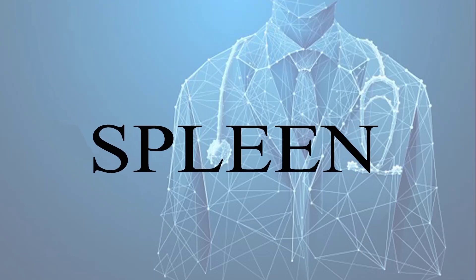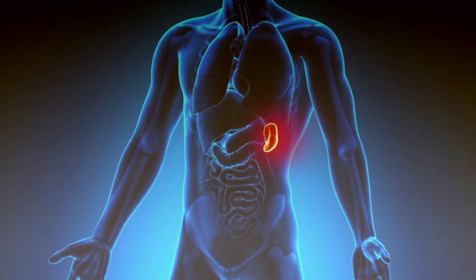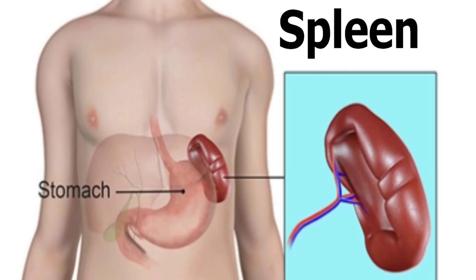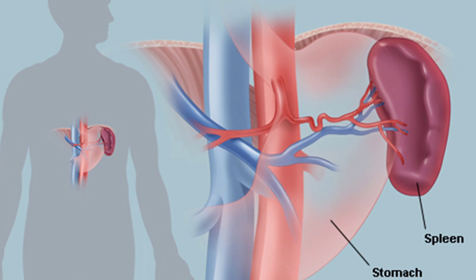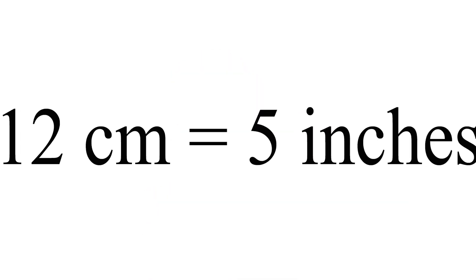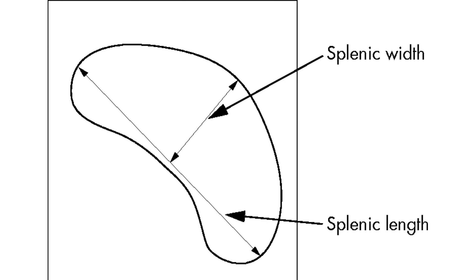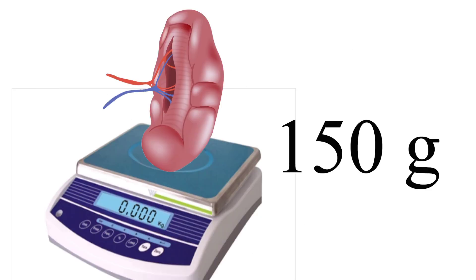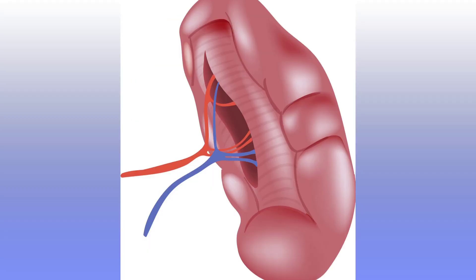In this video, let's see about the spleen and its anatomy. The spleen is a secondary lymphoid organ. It is soft, highly vascular, and dark purple in color. The spleen is 12 cm in length (5 inches), 7 cm in breadth (3 inches), and 3 cm in thickness (1 inch). The weight of the spleen is approximately 150 grams, which is 7 oz.